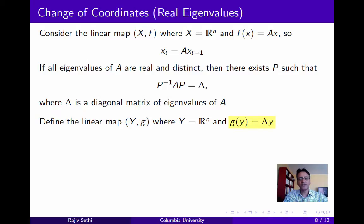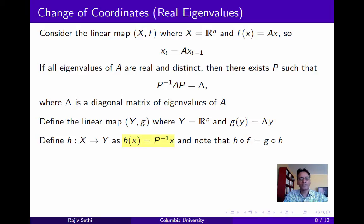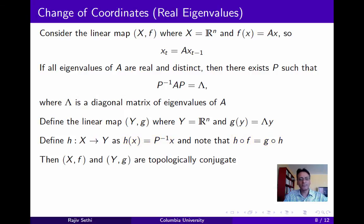We'll define a linear map (Y, g) also in Euclidean space, where the matrix describing the evolution of states is this diagonal matrix lambda. Define the function h from X to Y as h(x) = P inverse x, and note that this function h is a homeomorphism, and it satisfies precisely the conditions we need for the topological conjugacy of these two systems. The composition of h with f is equal to the composition of g with h, meaning the two systems (X, f) and (Y, g) are topologically conjugate. We can deduce the properties of fixed points in the first system by looking at the properties of fixed points in the second.